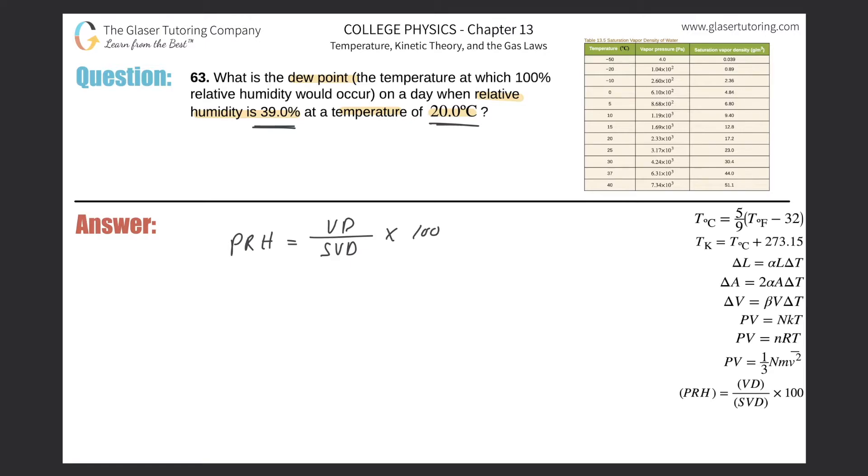We can simply find the vapor density. The reason why is because this saturation vapor density is basically a constant number at a given temperature. This represents the maximum amount of water vapor in air at a certain temperature.